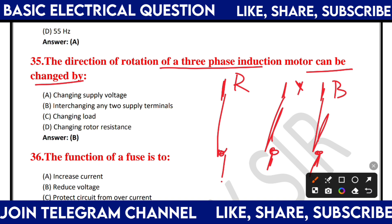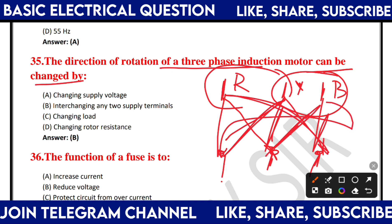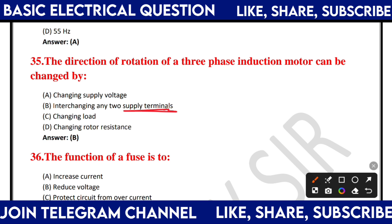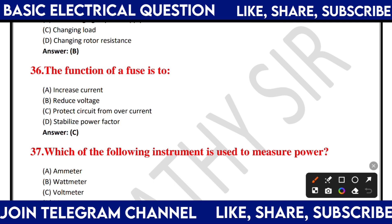If we have a data and rotate in clockwise direction, we call it R-Y-B sequence. If we interchange any two supply terminals, the phase sequence reverses to R-B-Y. The function of a fuse is to protect the circuit from overcurrent — Option C.